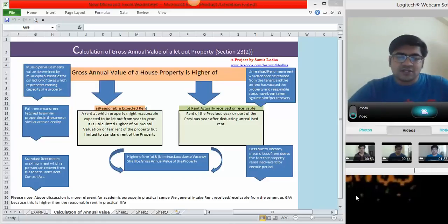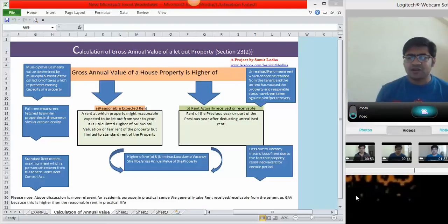Municipal valuation is just a value determined by your municipal authority as expected rent from a property, that is earning capacity of property on annual basis. So, this is a particular rate you can see or you can say is defined by your municipal authorities. Another is fair rent.